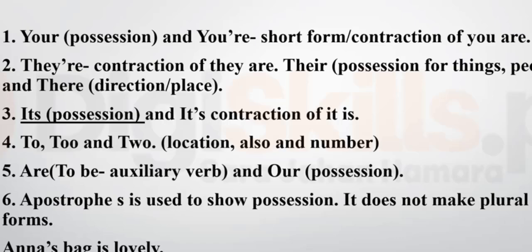Apostrophe S is used to show possession — it does not make a plural form. For example, when you use a noun for possession, you use apostrophe S: 'Anna's bag is lovely' means the bag belongs to Anna. Apostrophe S is used in contractions like 'it's' (it is), and also when you use a noun to show possession. These are two different uses of apostrophe S.